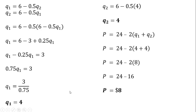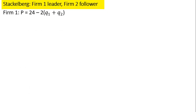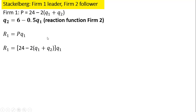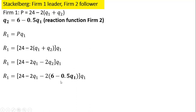Now let's move on to the Stackelberg model. Firm 1 is the leader, firm 2 the follower, with the same market inverse demand. We know from the Cournot solution that firm 2's reaction function is Q₂ = 6 minus one-half Q₁. Starting with firm 1's revenue — price times Q₁ — substituting the price equation in for P and simplifying what's in brackets.